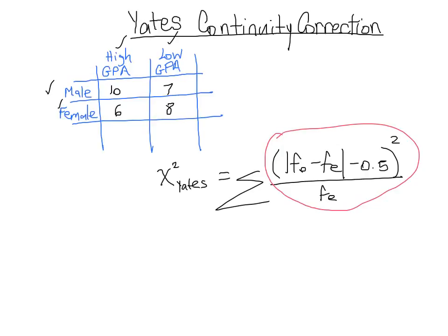First we need an expected frequency table. We already have our observed frequency table or fo table of values, and we're going to get an fe table of values which looks almost identical.